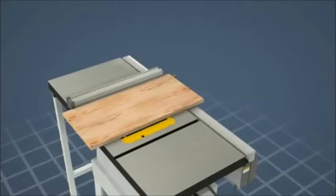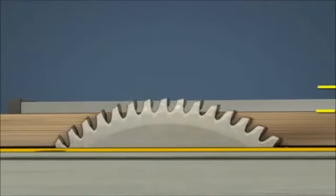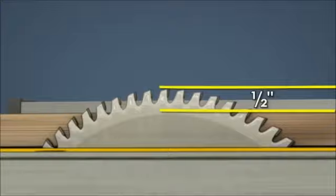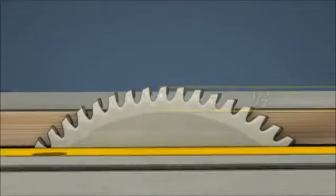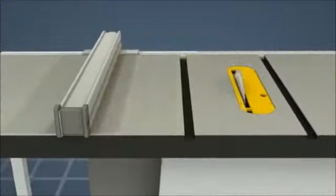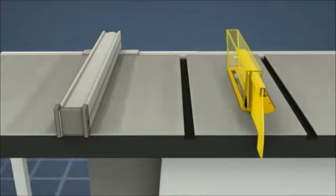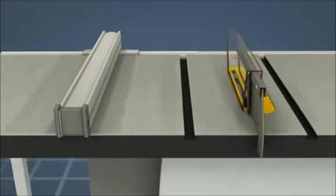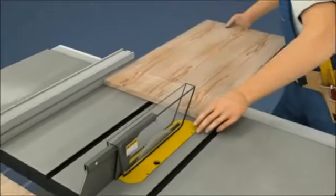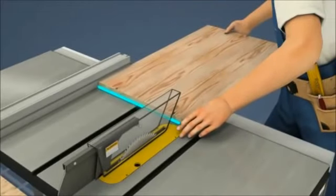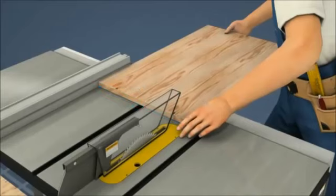To make a rip cut, follow these steps. 1. Set the blade height about a half inch higher than the board to be cut. 2. Set the rip fence at the desired width measurement from the blade. 3. Move the blade guard into position. 4. Lay the board on the table in front of the blade, tight against the rip fence. Never let the board touch the blade until the saw comes up to full speed.